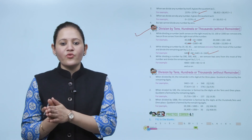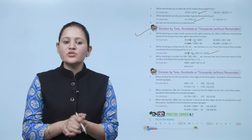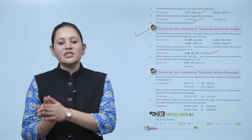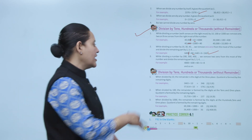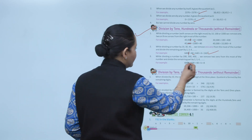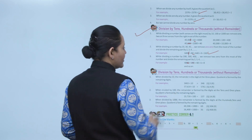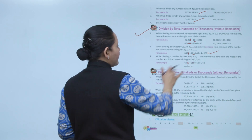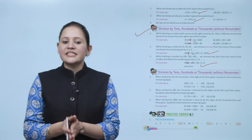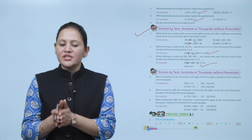While dividing a number by 200, 300, or 400, we remove two zeros from the rightmost of the number and divide the remaining part by 2, 3, 4, and so on. For example, 4800 divided by 600: remove two zeros to get 48, then 48 divided by 6 gives you 8.